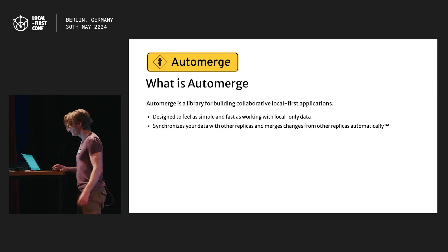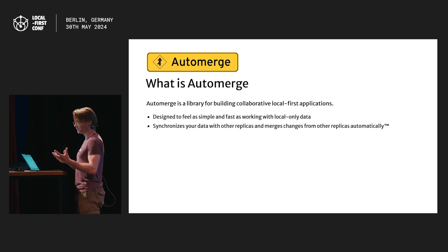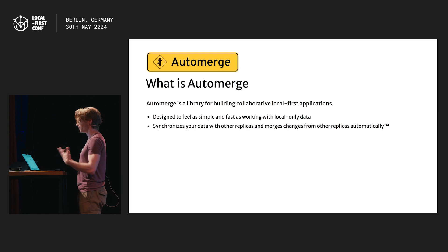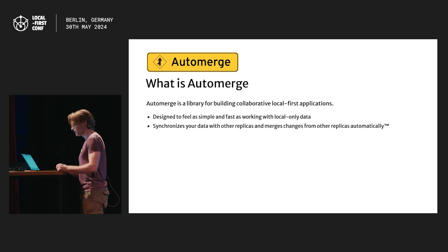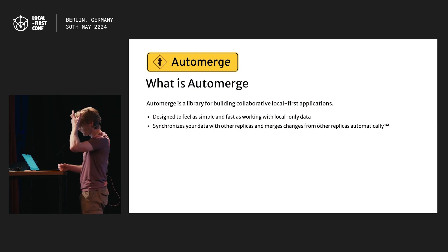What is Automerge? It's a library for building collaborative local-first applications. It's designed to feel like you're just working on local data in memory, but Automerge synchronises your data with other devices and merges changes from other devices automatically. That 'merges automatically' bit should raise eyebrows because it seems like a thing you can't do.